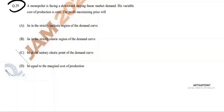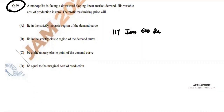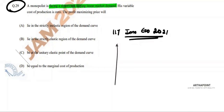This is question number 29 of IIT JAM Economics 2021 paper. A monopolist is facing a downward sloping linear demand curve in the market — this is what the monopolist is facing, this is the demand curve.